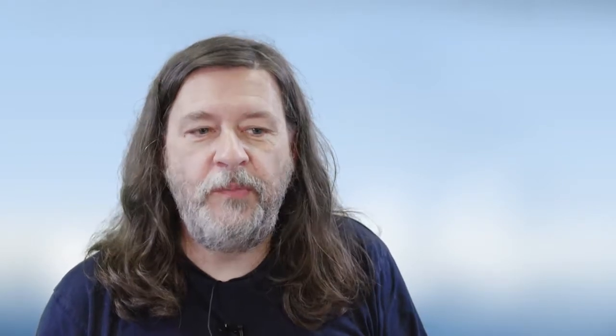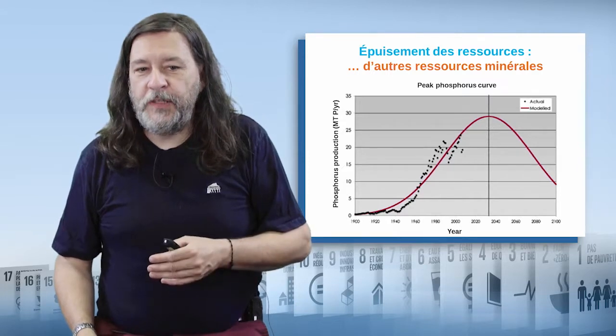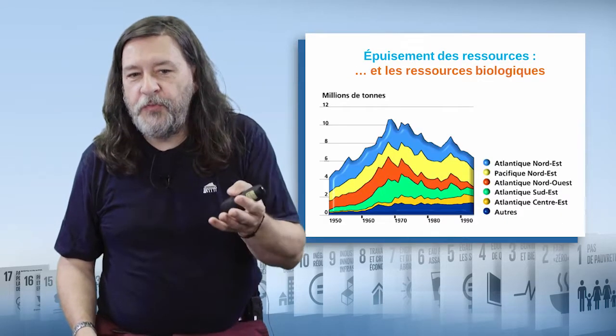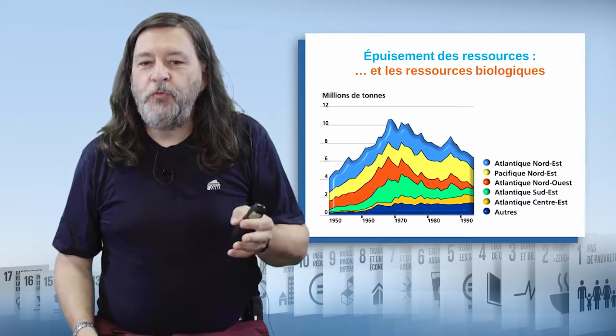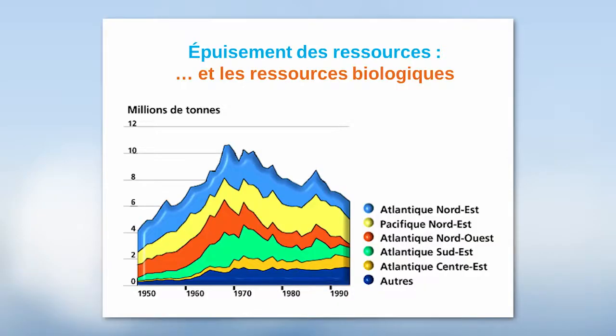I talked about non-renewable resources, but the question also arises for renewable resources when they are used faster than their capacity to regenerate. For instance, fish. You can see here a graph that shows the evolution of fishing over time, with a characteristic curve peaking in the 1970s, and now there is a drop in fishery productivity.